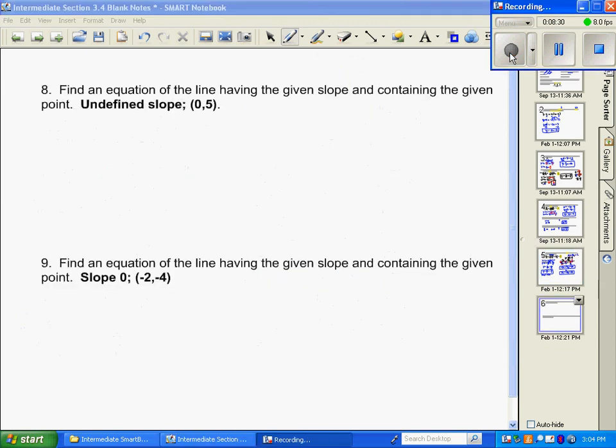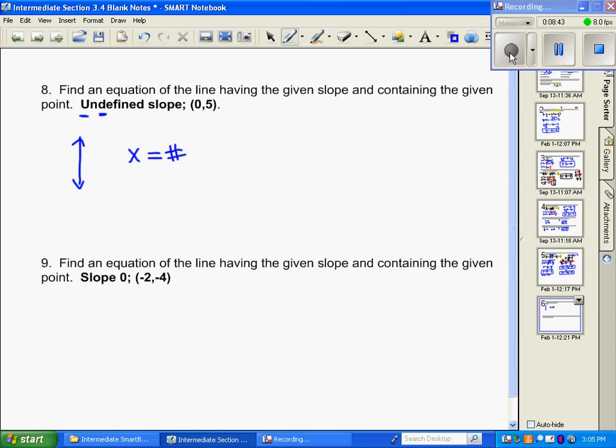And our next one, it says, write an equation with an undefined slope. Remember, we said undefined is up and down. And that is a vertical line. So vertical lines have x equals some number for their equation. So what does x equal? And the only point we're given, the equation of this line is x equals 0.